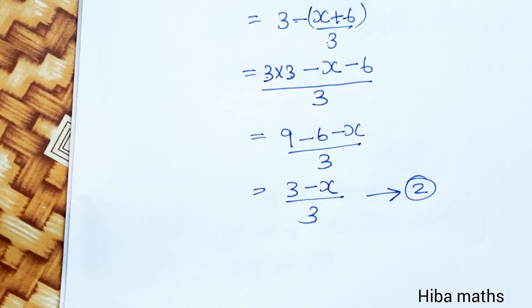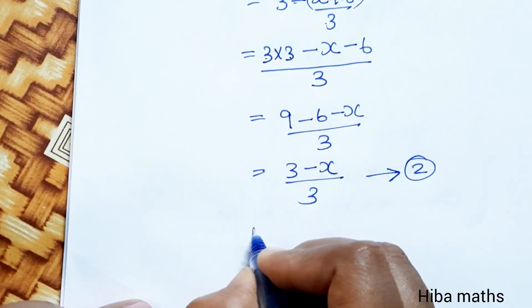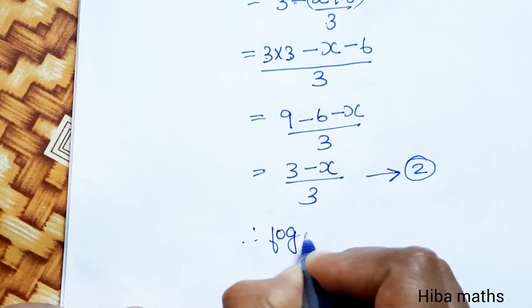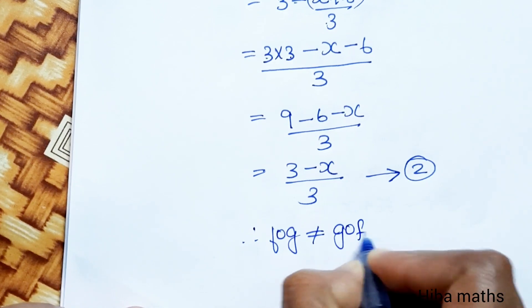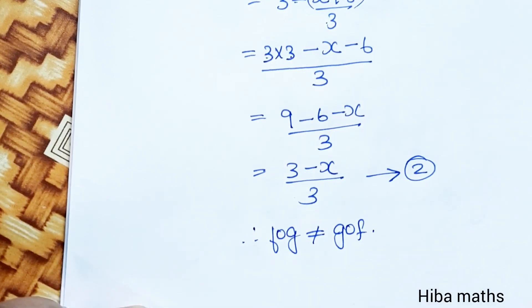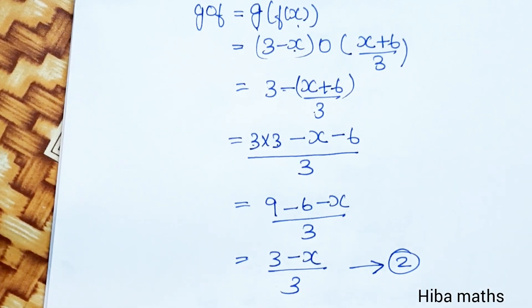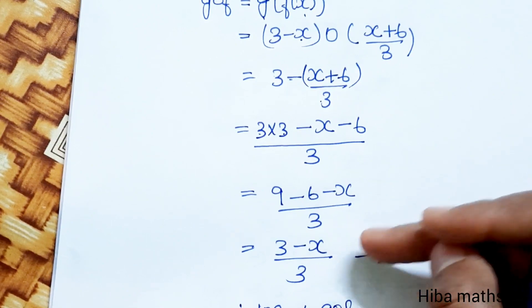The first result and second result are not equal, therefore f of g is not equal to g of f. This is the third answer.